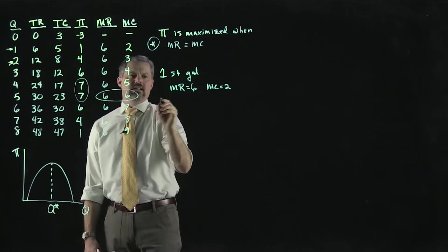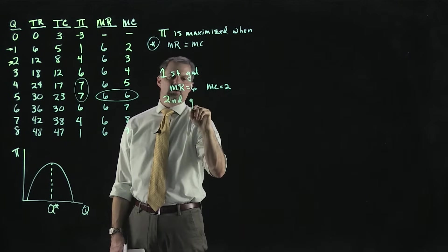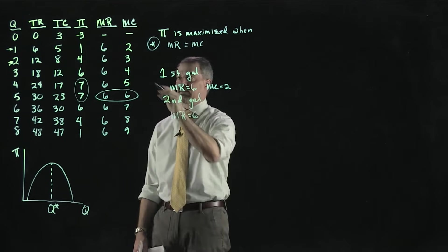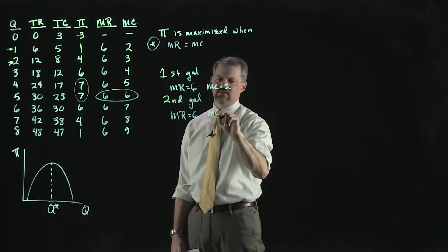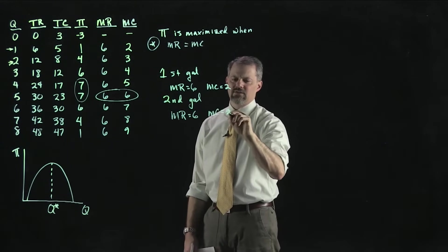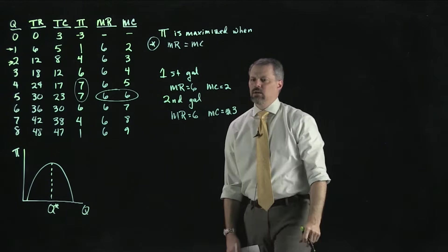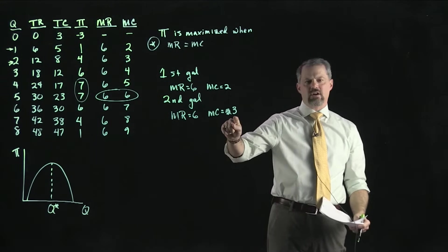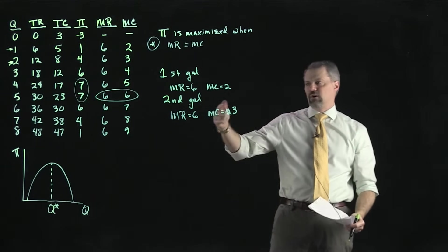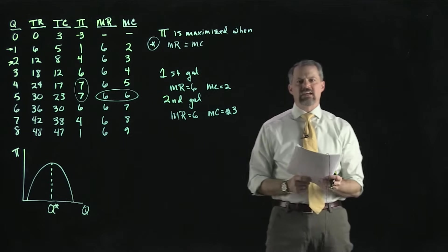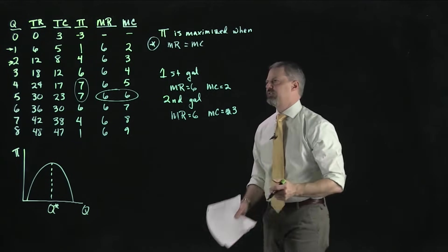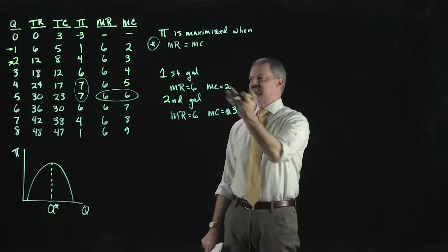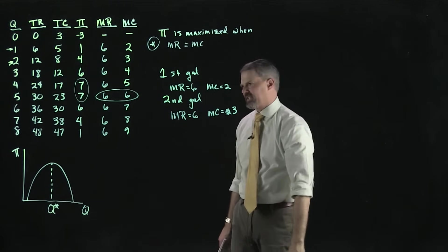For the second gallon, marginal revenue is again $6 and now marginal cost is $3. This still passes the test — marginal revenue is still bigger than marginal cost, so the firm would certainly want to produce the second gallon. This would also be true for the third and fourth gallons. Let's skip the fifth one for a moment.